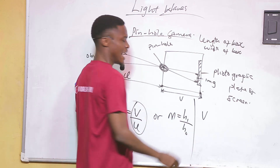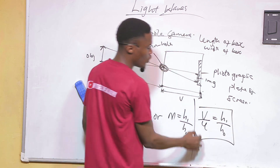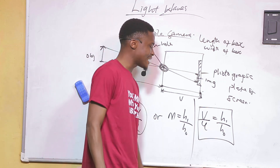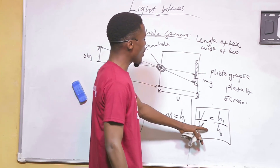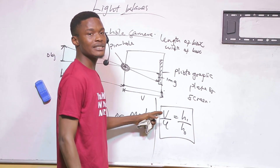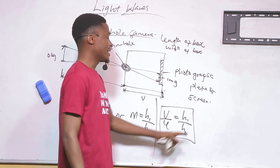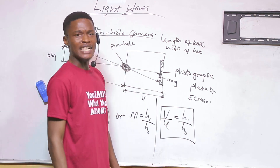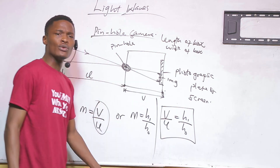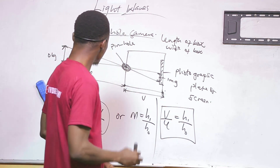If you combine these two formulas, you get the pinhole camera formula: V/U = Hi/Ho. Remember: V is image distance, U is object distance, Hi is image height, and Ho is object height.